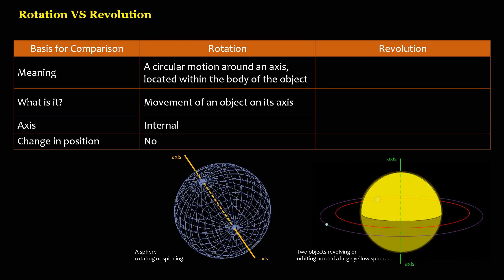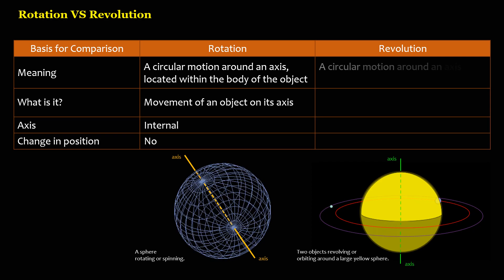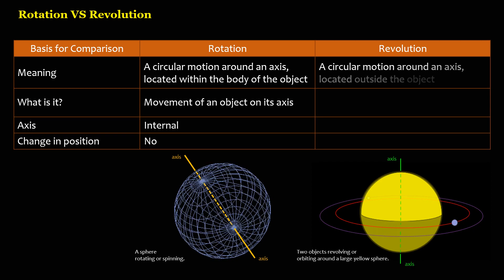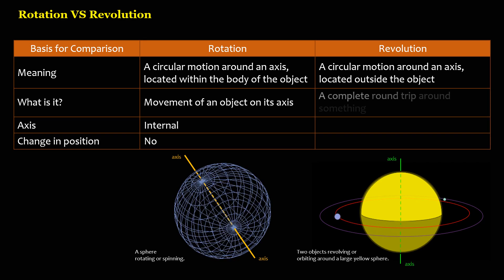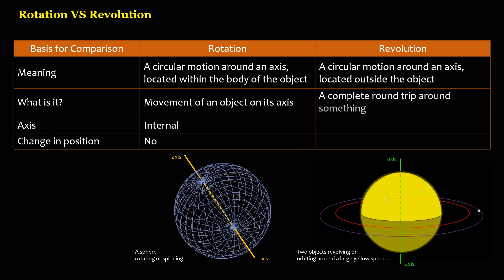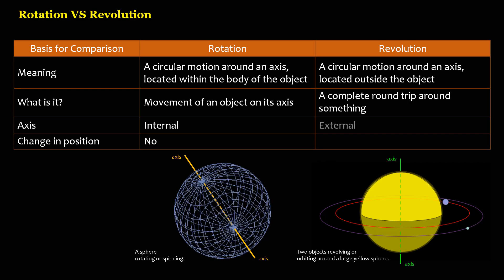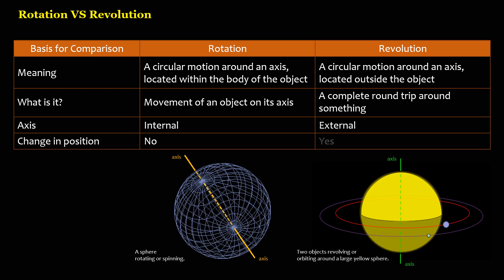Revolution is a circular motion around an axis, located outside the object. It is a complete round trip around something. The axis is external. There is a change in position.